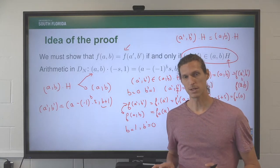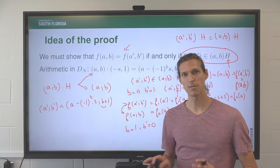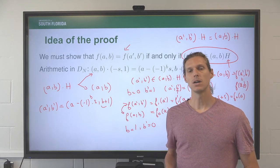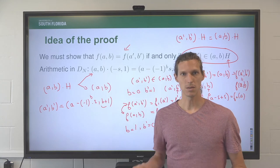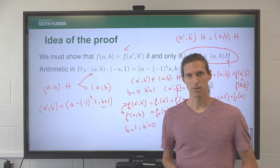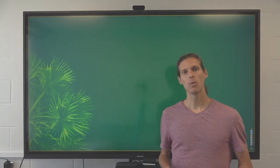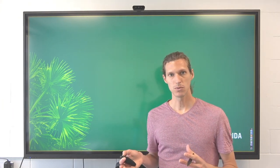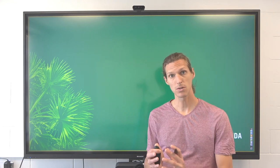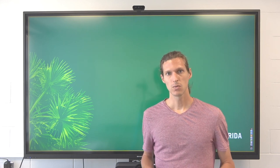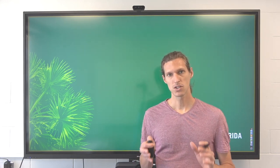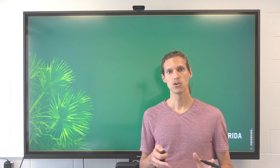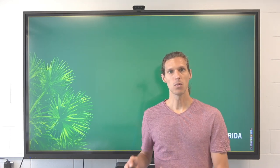We must also handle the other direction: if F evaluates (a, b) and (a prime, b prime) to the same element, then they must be in the same coset modulo H, following the same pattern. In the end, we have proven that we can reduce the hidden shift problem to an instance of the hidden subgroup problem of the particular special shape we are interested in. In the next lecture, we will see how to solve that hidden subgroup problem for subgroups H of the form two elements: the neutral element and (K, 1). Thank you for your attention.